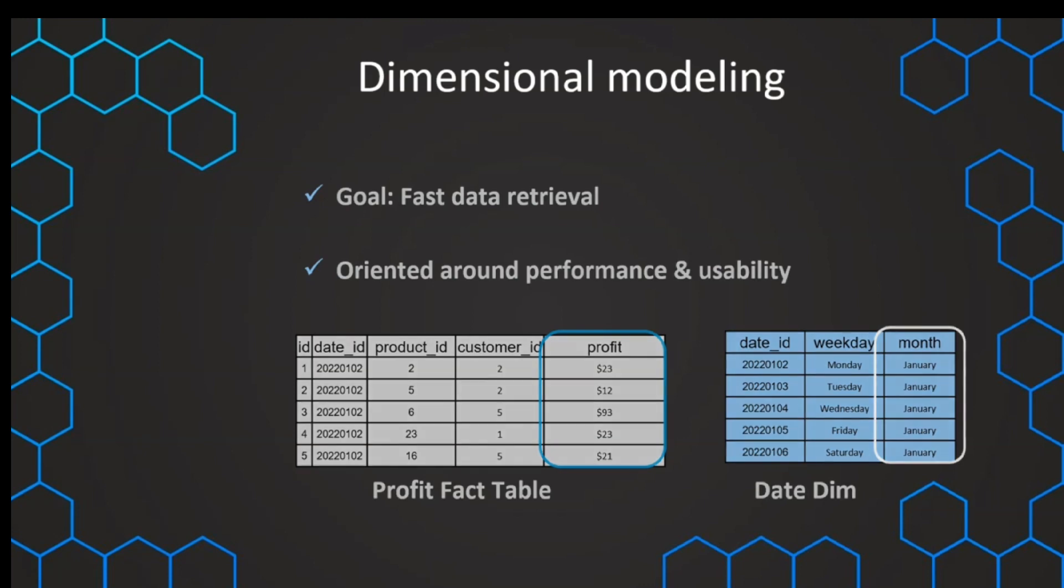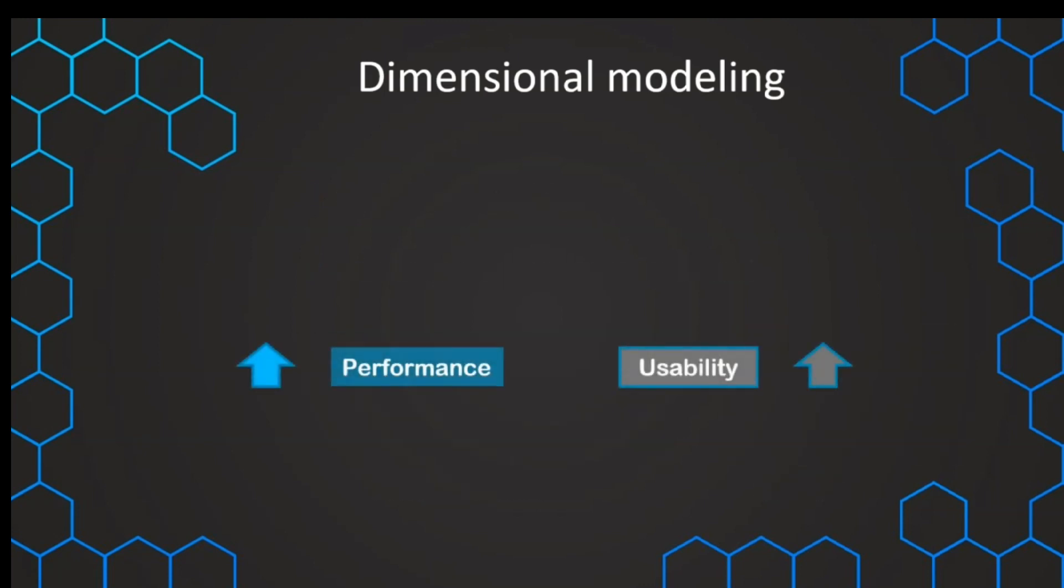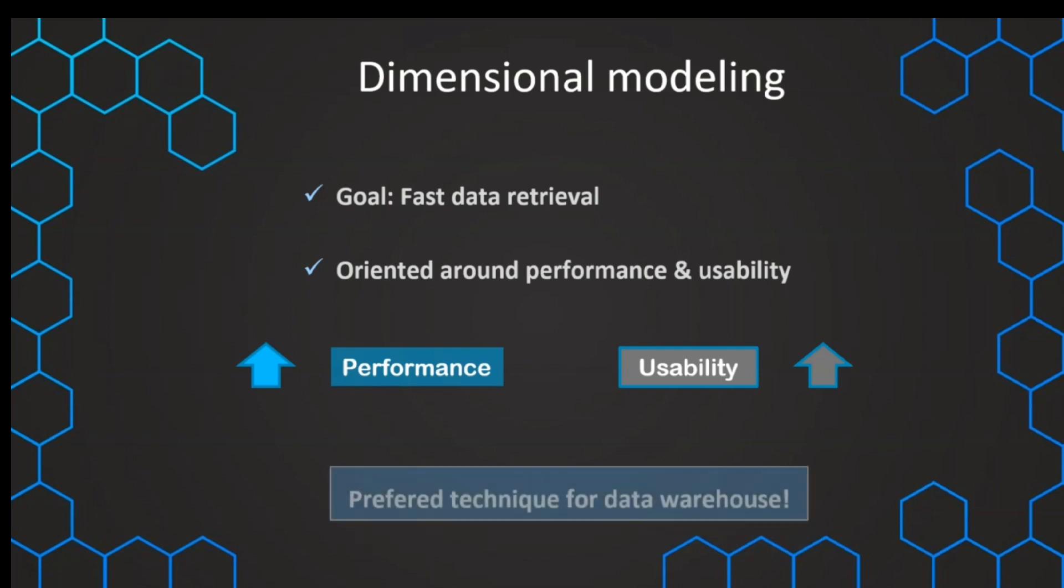And this is where the benefits of high performance and high usability in a dimensional model are coming from. So we do dimensional modeling for the goal of fast data retrieval that comes from high query performance and high usability because of the way the data is structured into dimensions and fact tables.